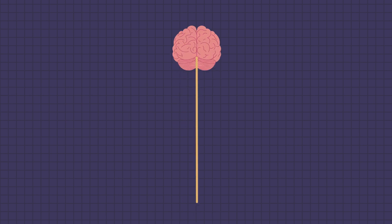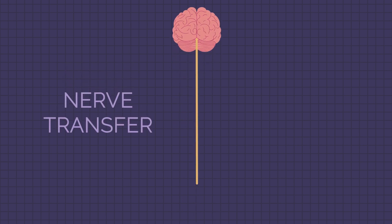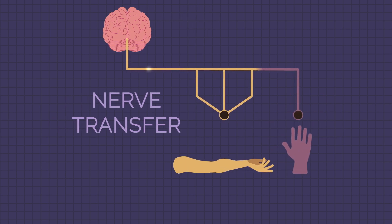Let's look at the difference between a nerve transfer and a tendon transfer. In nerve transfer, the surgeon uses a nerve from a functioning muscle connected to your brain and reroutes it to supply a non-functioning muscle.